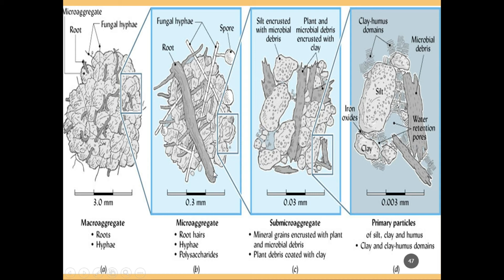But we still have fungal hyphae going in and through the microaggregates. At an even smaller scale, you can see the individual pieces of silt and clay and plant debris that are mixed in there.